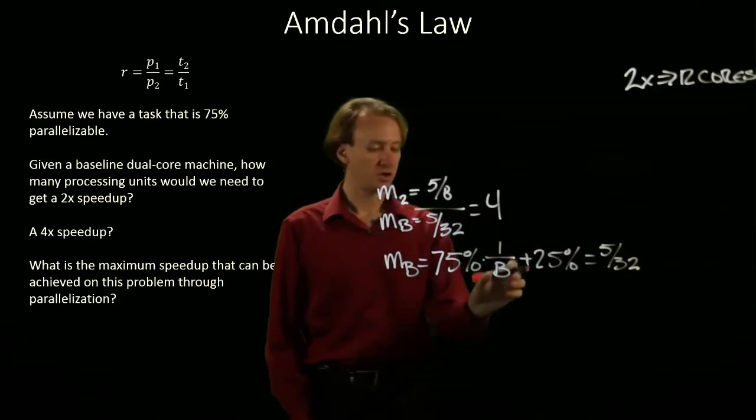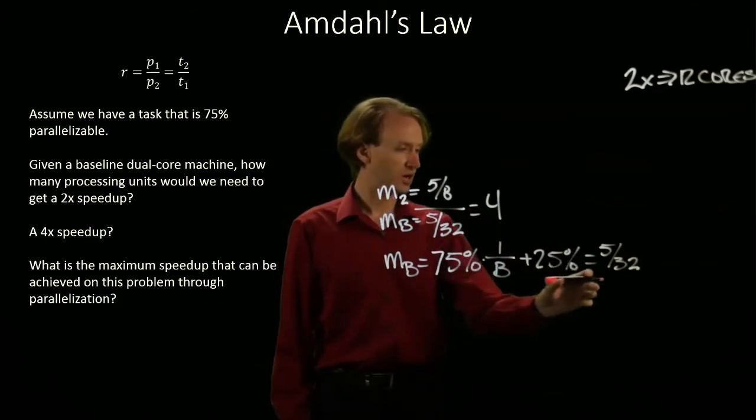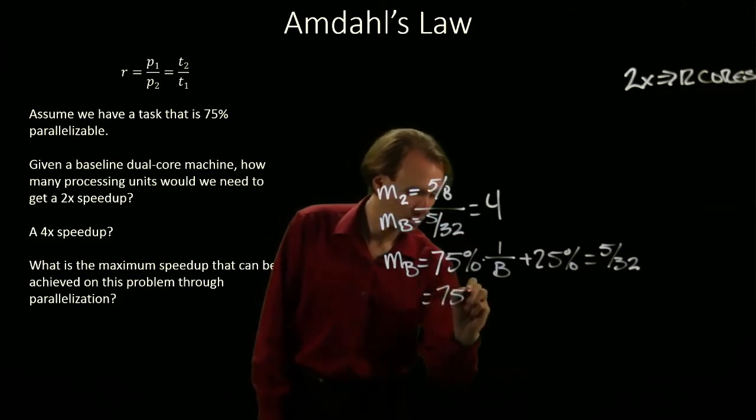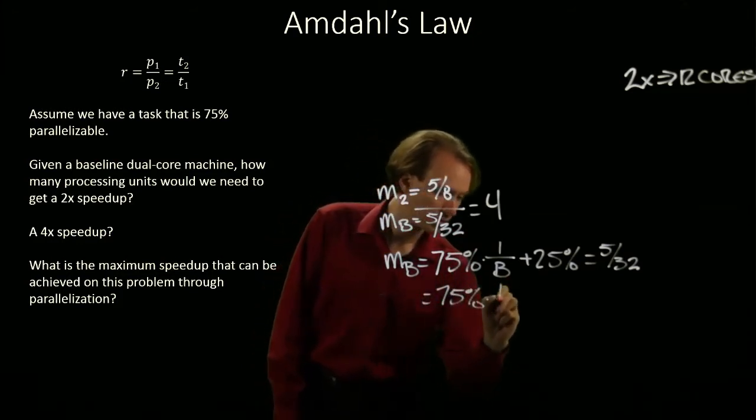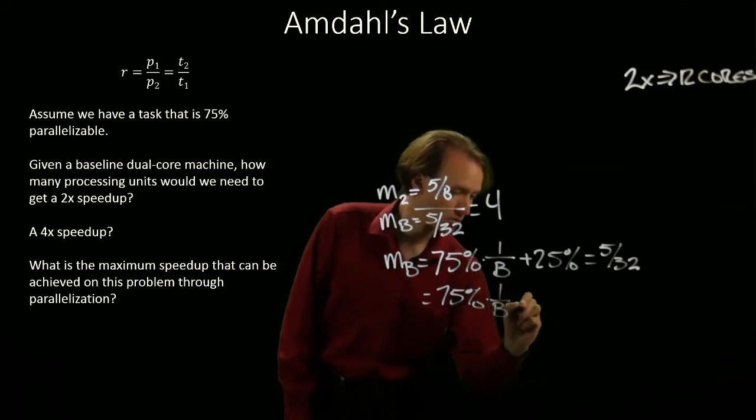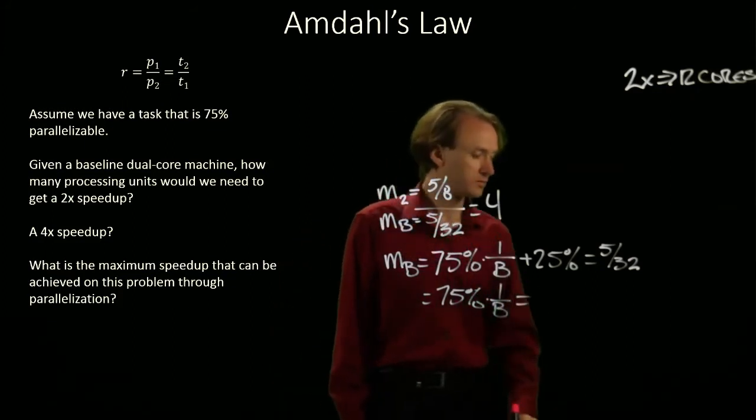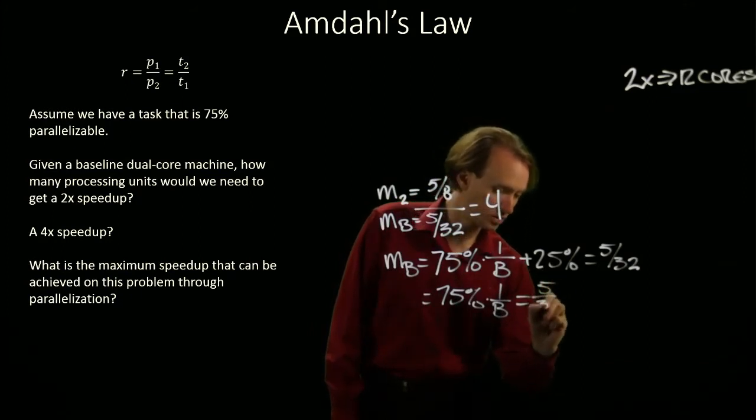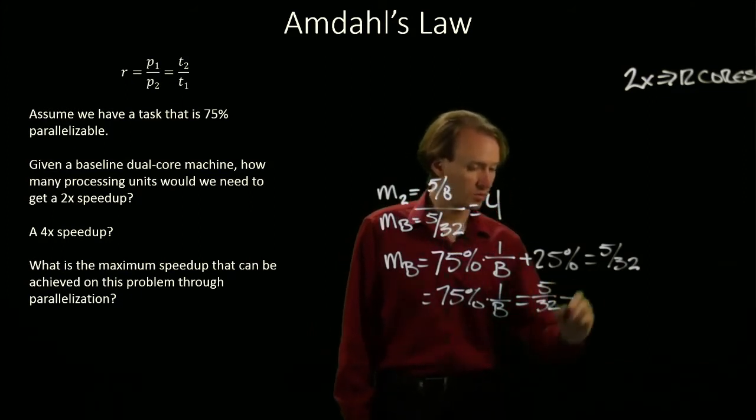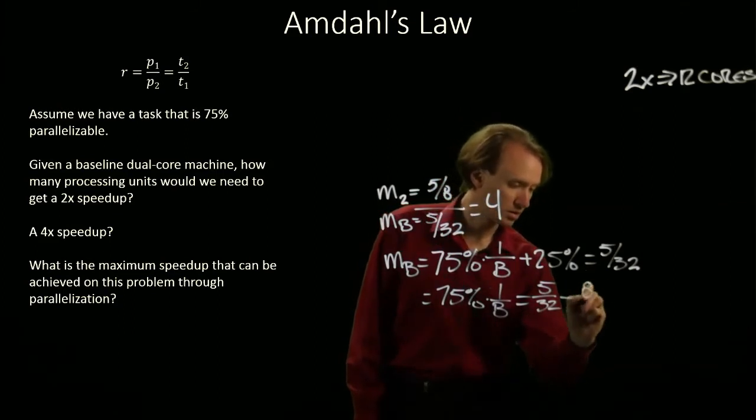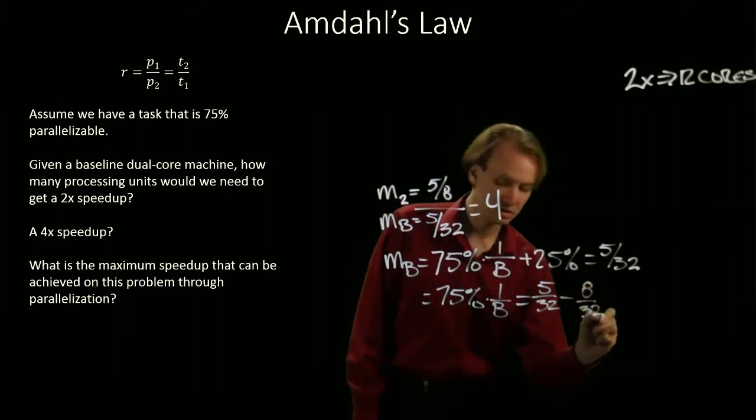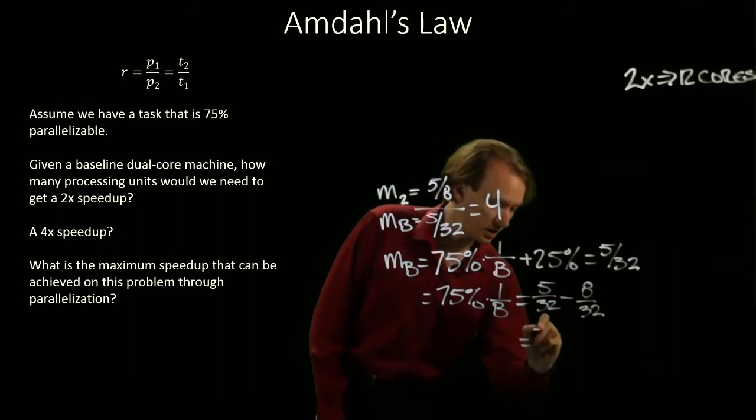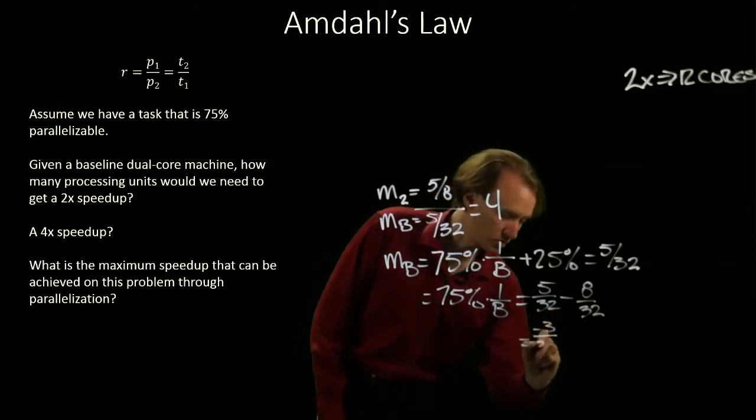So, now I need to solve for B and subtract the 1 fourth. 5 30 seconds, 1 fourth would be 8 30 seconds, which gives me negative 3 over 32.